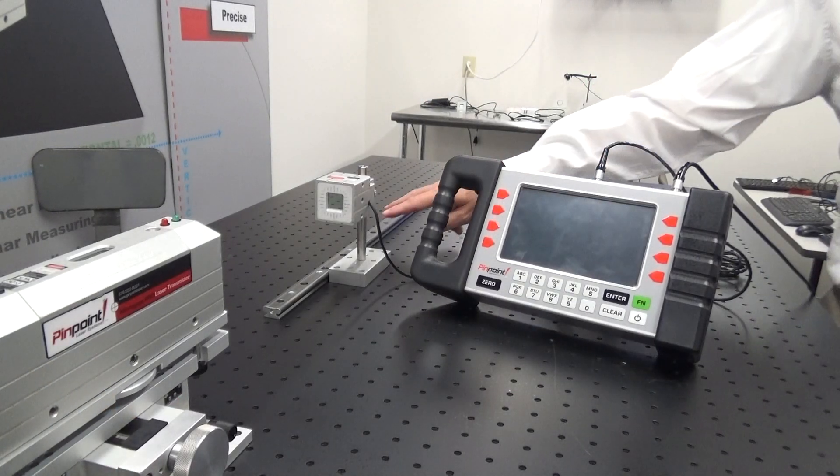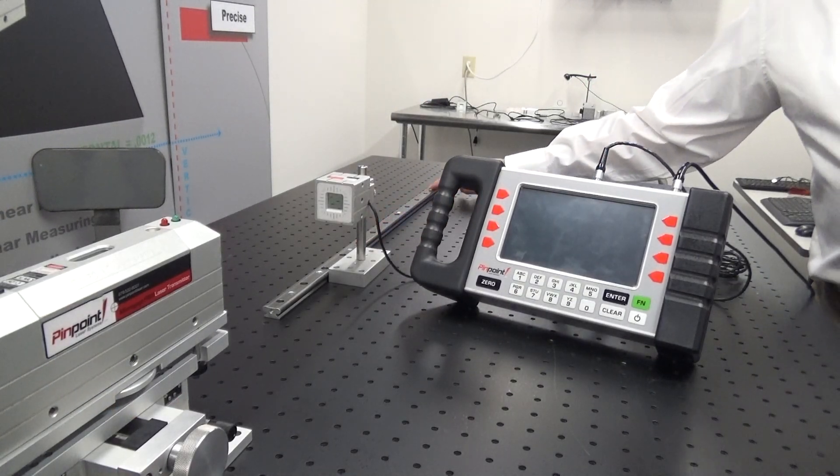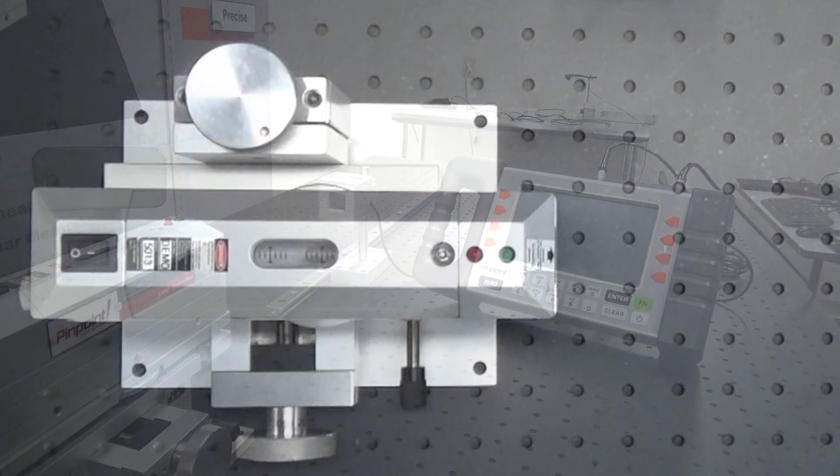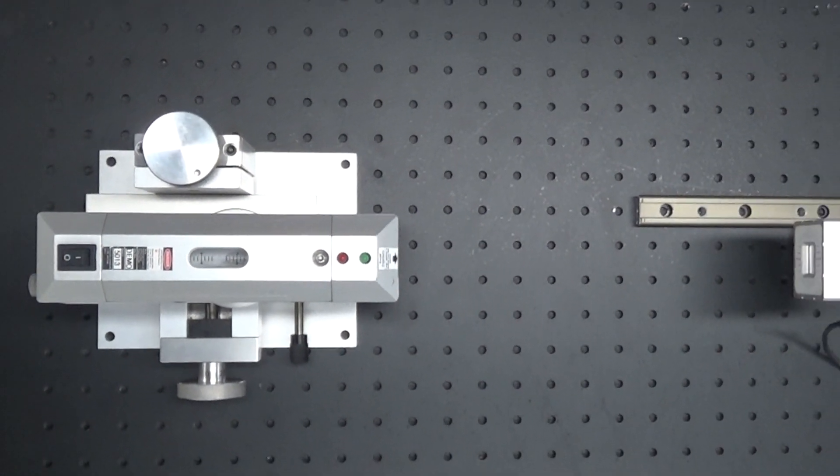For the purpose of this demonstration the rail is short. In most applications you will want to be at least two feet away, and our Pro system and 2D system are functional up to 150 feet.